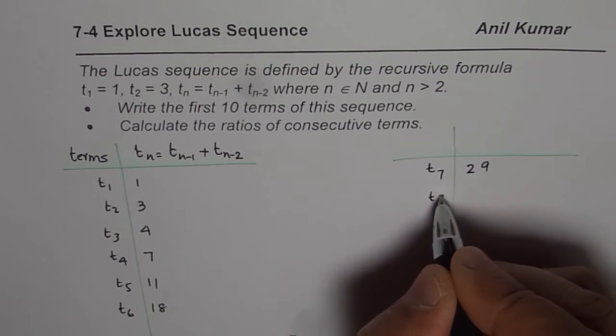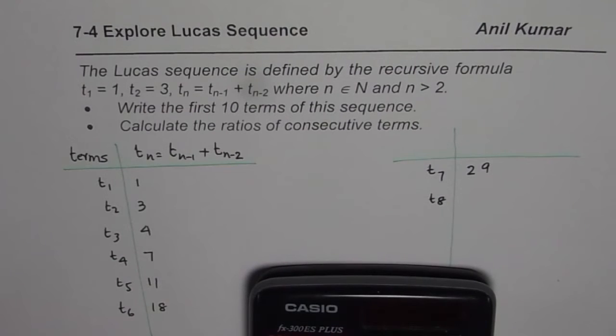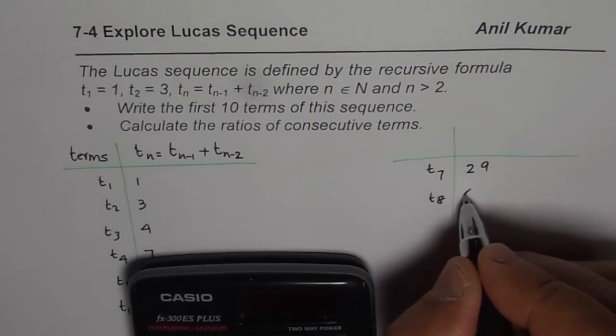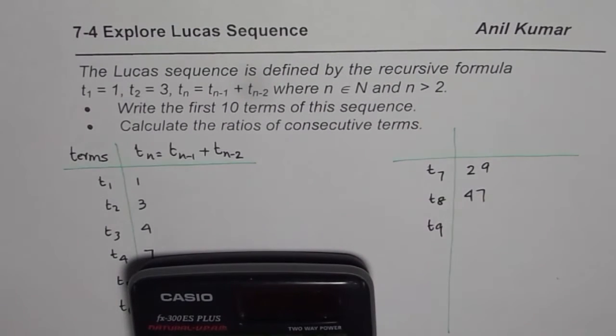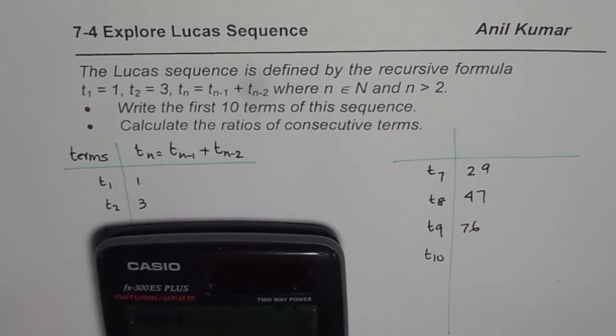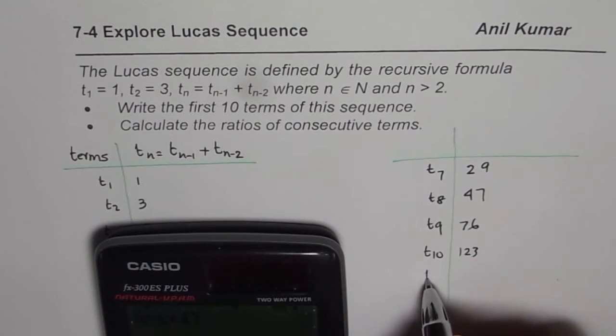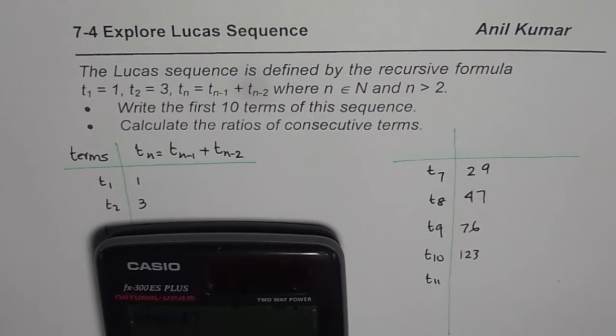t8 will be 29 plus 18 and that is 47. t9 will be 47 plus 29, that is 76 and t10 will be 76 plus 47 equals to 123. Let me write t11 and t12 also, 123 plus 76 equals to 199 and let me write t12 also here, 199 plus 123. We kind of extended the list.